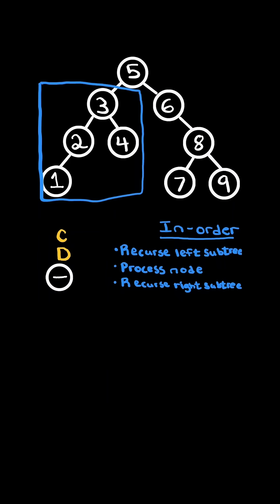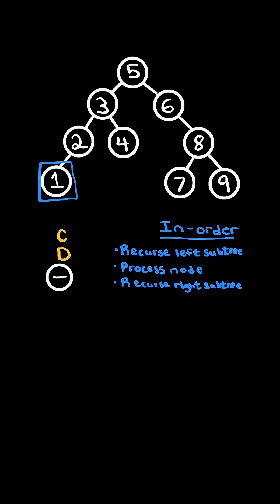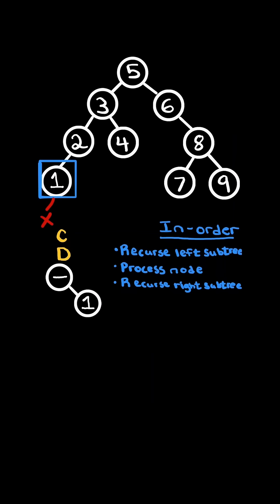In this example, we first recurse on the left subtree repeatedly until there is no left subtree, so now we will process the node. We set the left subtree of the node to null, we set current dot right to be equal to the node, and we set current equaling the new node. We continue with the inorder traversal and recurse on the right subtree, but its right subtree is null.